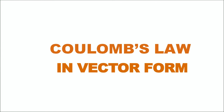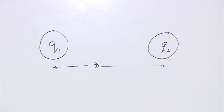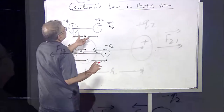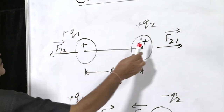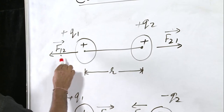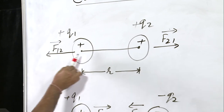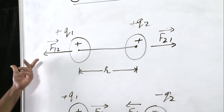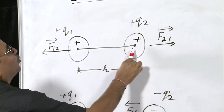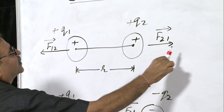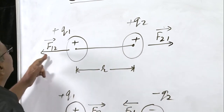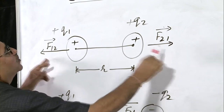Now we will explain Coulomb's law in the vector form. Let there be two point charges Q1 and Q2, separated by a distance r. Looking at the figure, this is charge +Q1 and this is charge +Q2. The force on charge 1 due to charge 2 will be directed from right to left, and the force on charge Q2 due to charge 1 will be from left to right. So F12 and F21 are in opposite directions.